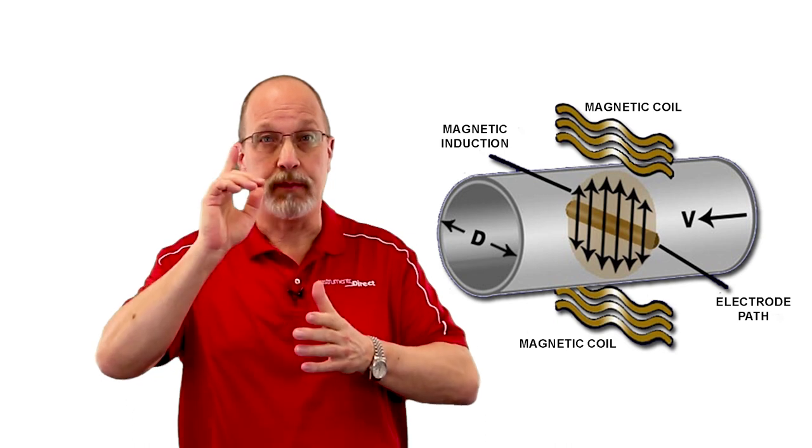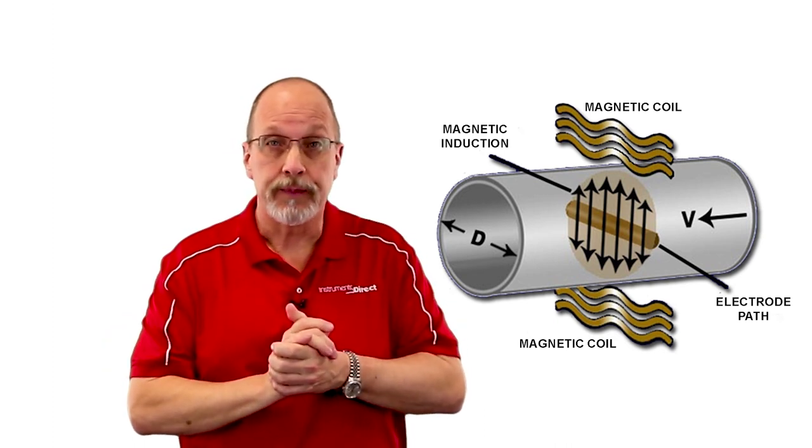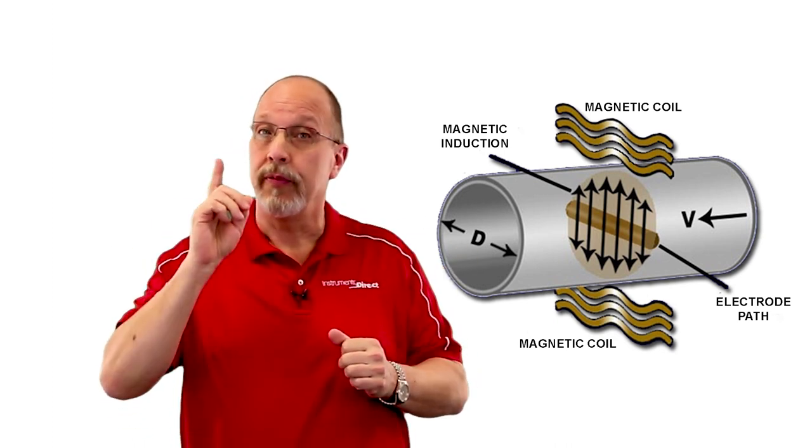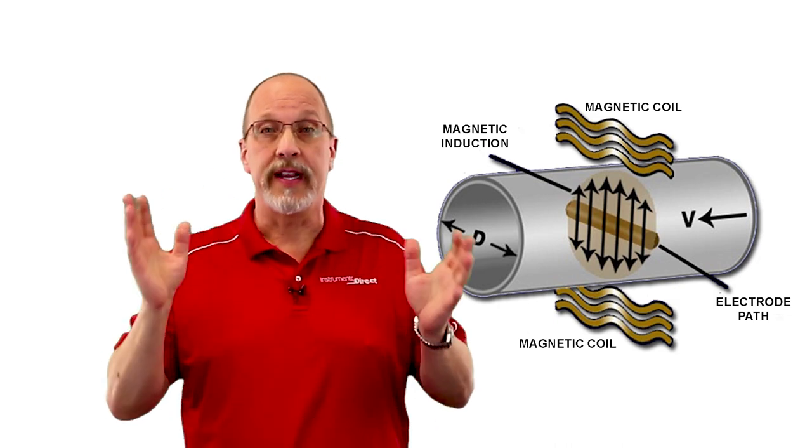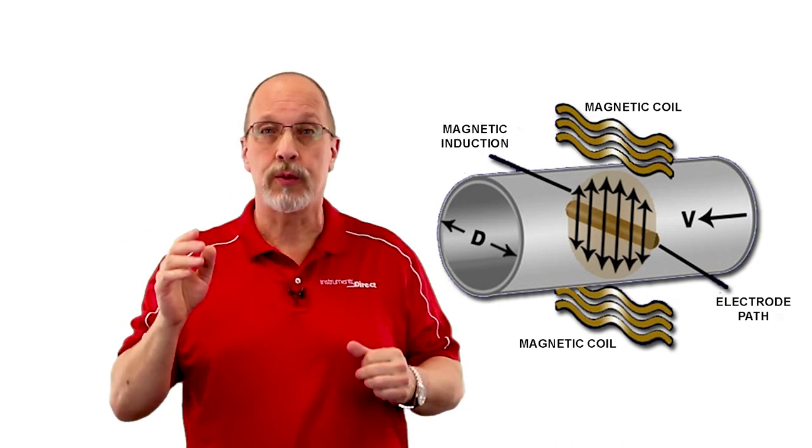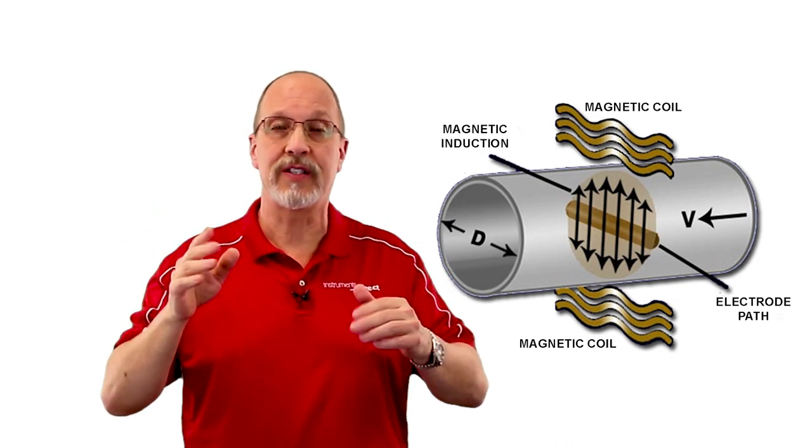How does an electromagnetic flow meter work? The principle of operation of an electric magnetic flow meter, or more commonly referred to as a Mag Meter, is based on Faraday's Law, which states that the voltage induced across any conductor as it moves at right angles through a magnetic field is proportional to the velocity of the conductor. Ouch! That hurt my brain. How about you? Was that a little too technical?